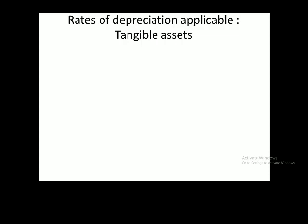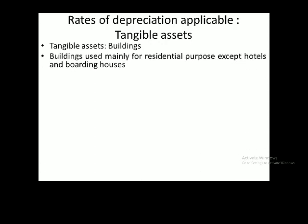Let me start with the tangible assets — let me start with buildings. Buildings used mainly for residential purposes, except hotels and boarding houses. The rate of depreciation applicable is 5%. Any building used for residential purposes will attract this rate.